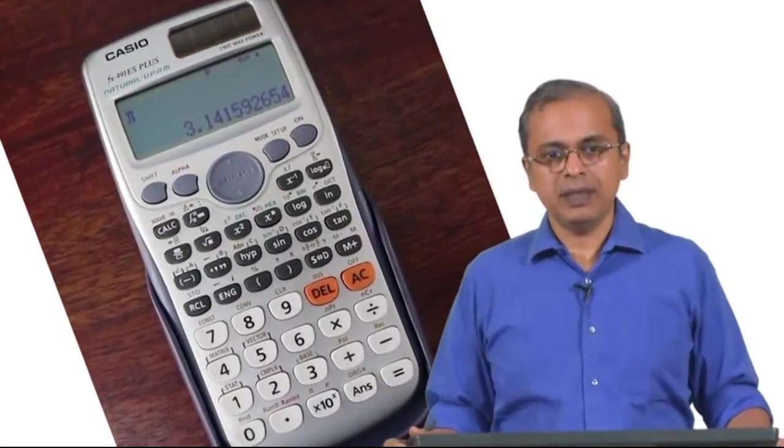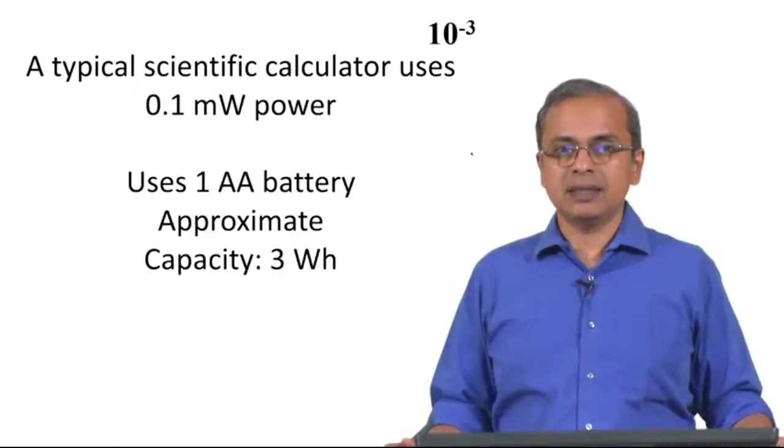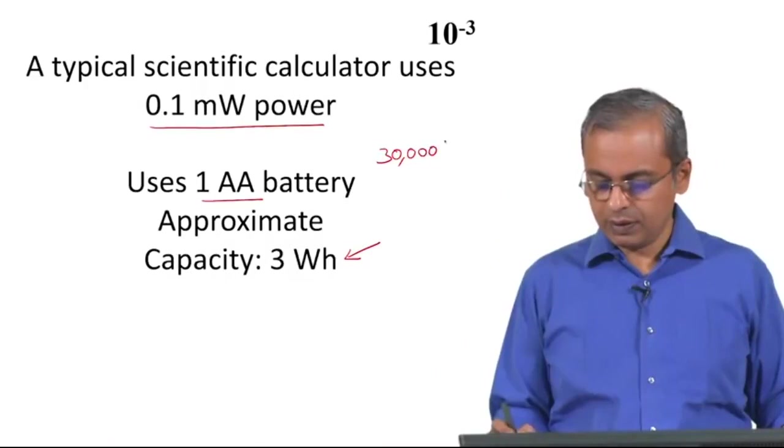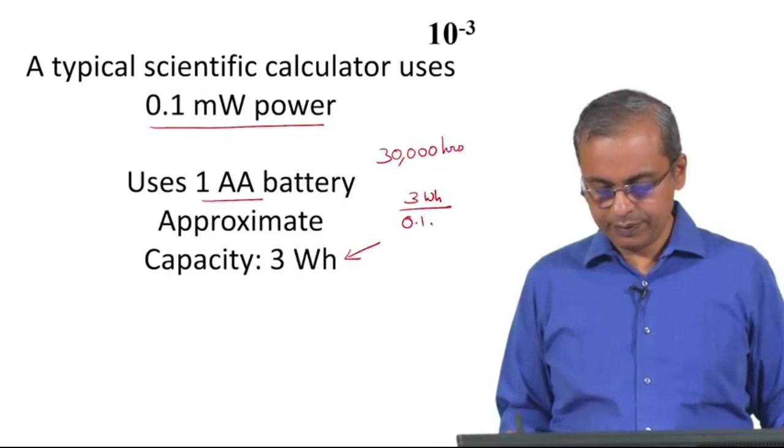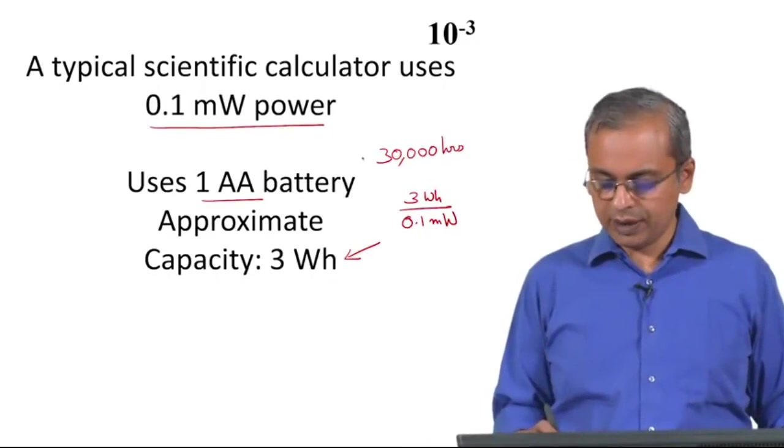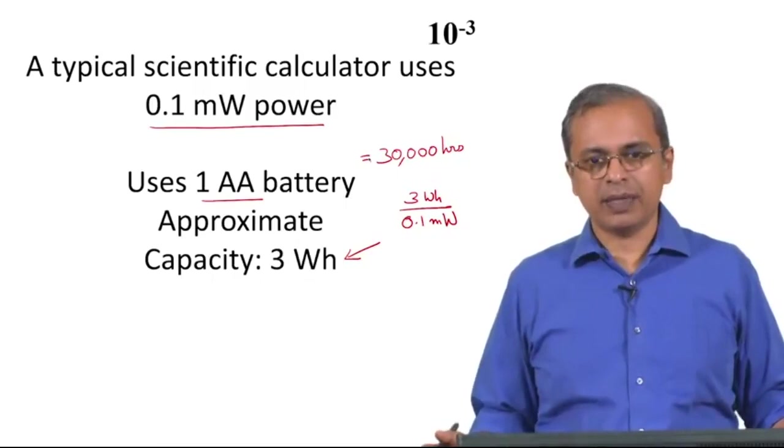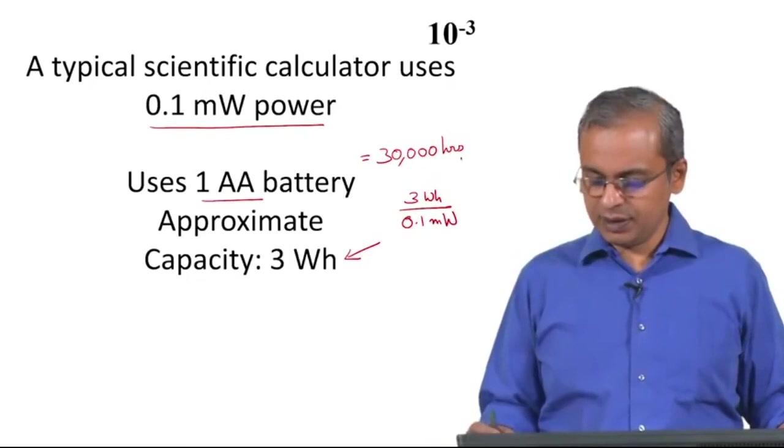A typical scientific calculator, which many students going to engineering colleges would possess, is typically using power in the scale of 0.1 milliwatt. That is simply 3 watt hours divided by 0.1 milliwatt, which should get you 30,000 hours. If you take a typical year, a year has about 8000 plus hours, so 30,000 hours is roughly about 4 years.